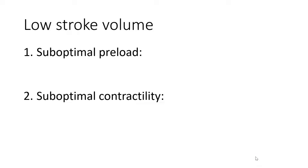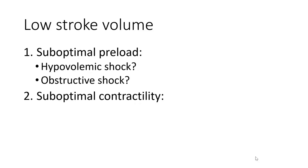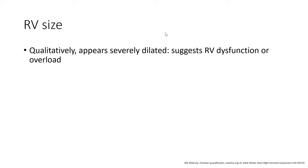When faced with a low stroke volume, the questions we always ask are: one, is this secondary to suboptimal preload? And two, is this secondary to suboptimal contractility? This helps us delineate causes of shock — including hypovolemic and obstructive shock under suboptimal preload, and cardiogenic shock under suboptimal contractility. Thinking about our dilated RV, we honed in on whether this could be secondary to obstructive shock. Qualitatively, our RV appeared severely dilated, suggesting RV dysfunction or overload.